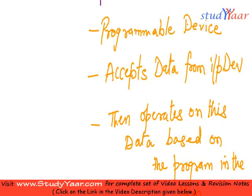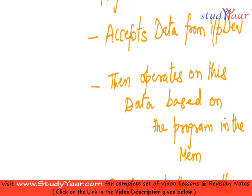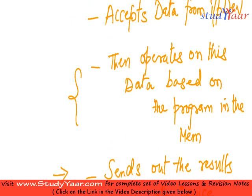For example, if you have a normal computer, it is going to accept data from your input device — that would be your keyboard. Then it is going to operate upon it using certain memory functions. There would be some program which is going to interpret what that data is, and it is then going to display that data on the screen. That program is going to illuminate certain pixels on your screen, show you the data in some particular font, and finally send the results to the output device — that would be your CRT or LCD screen on which you can view your data. That is a microprocessor at work.